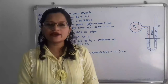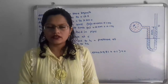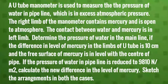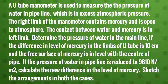Hello friends, this is Priyanka. Today we are going to solve a problem on a U-tube manometer. A U-tube manometer is used to measure the pressure of water in a pipeline which is in excess of atmospheric pressure. The right limb contains mercury and is open to atmosphere. The contact between water and mercury is in the left limb. Determine the pressure of water in the main line if the difference in level of mercury in the limbs is 10 centimeters and the free surface of mercury is level with the center of the pipe. If the pressure of water in the pipeline is reduced to 9810 Newton per meter square, calculate the new difference in the level of mercury and sketch the arrangements in both cases.